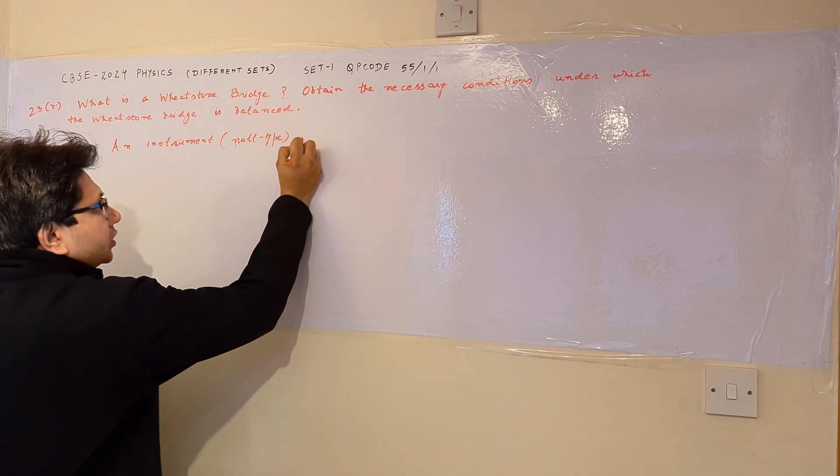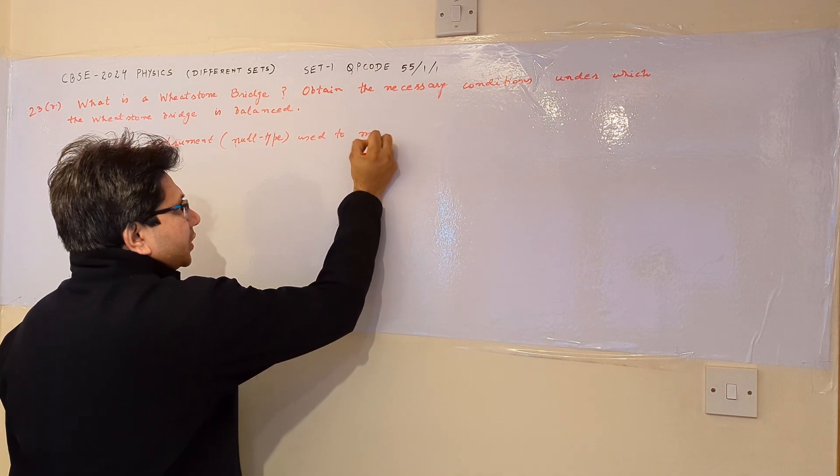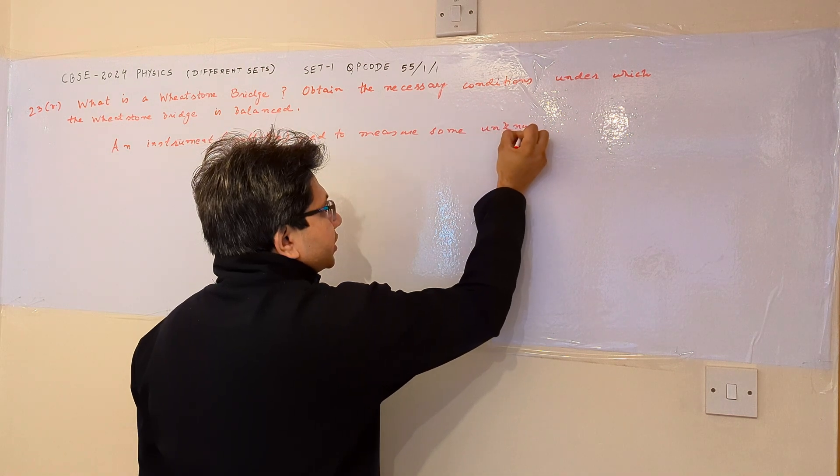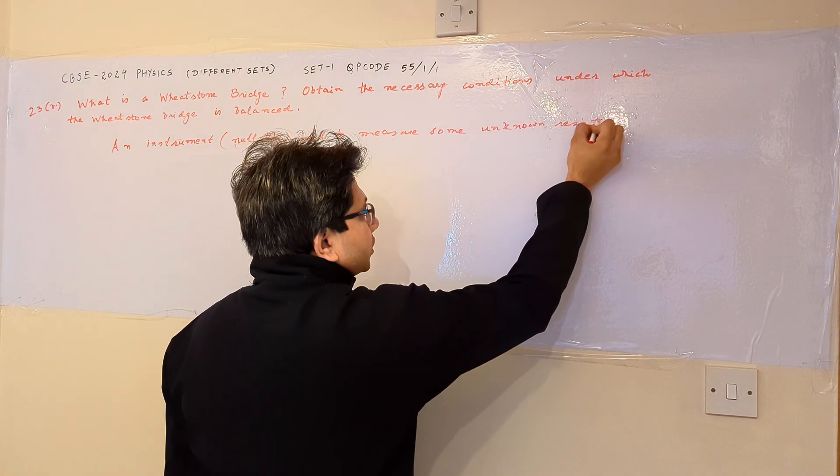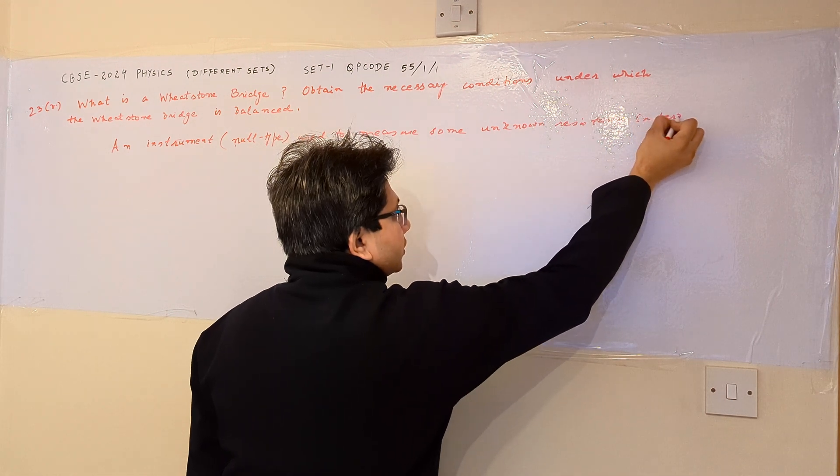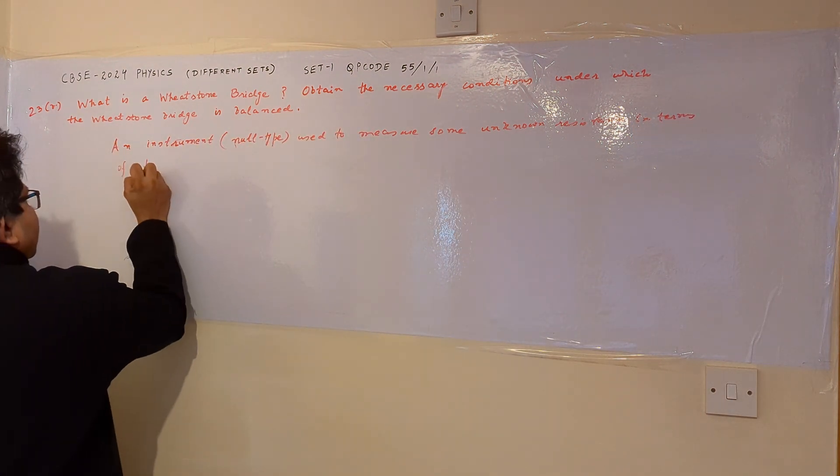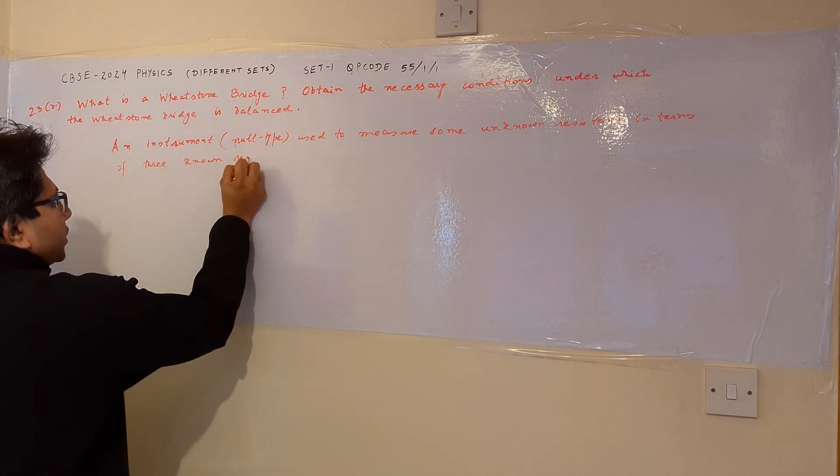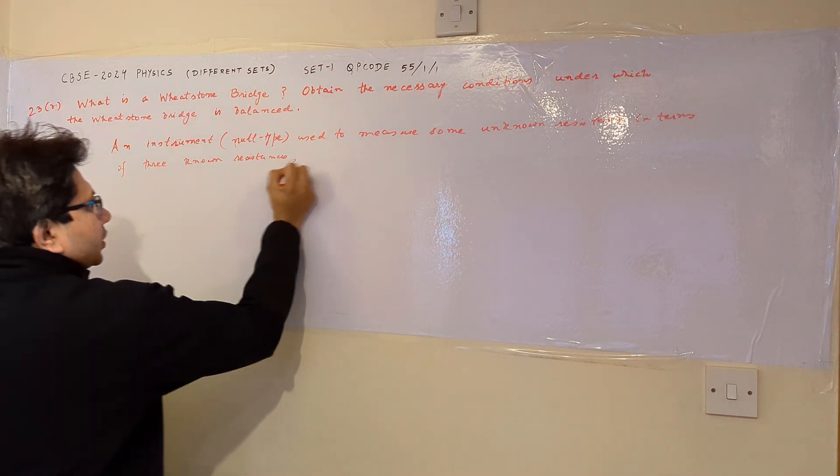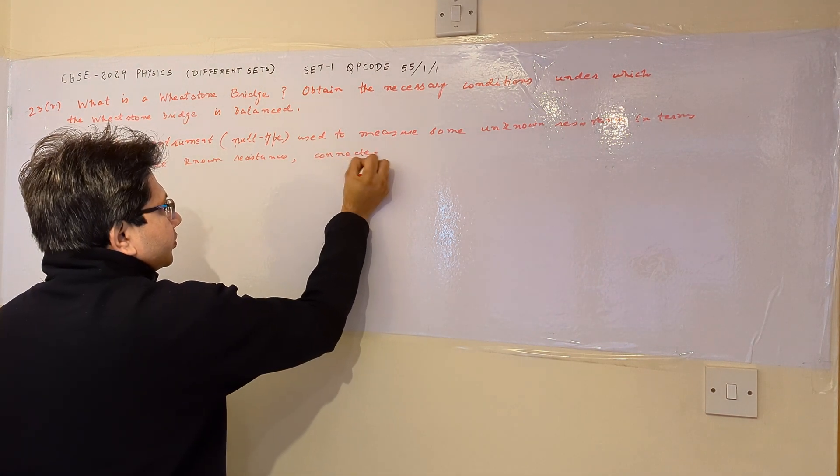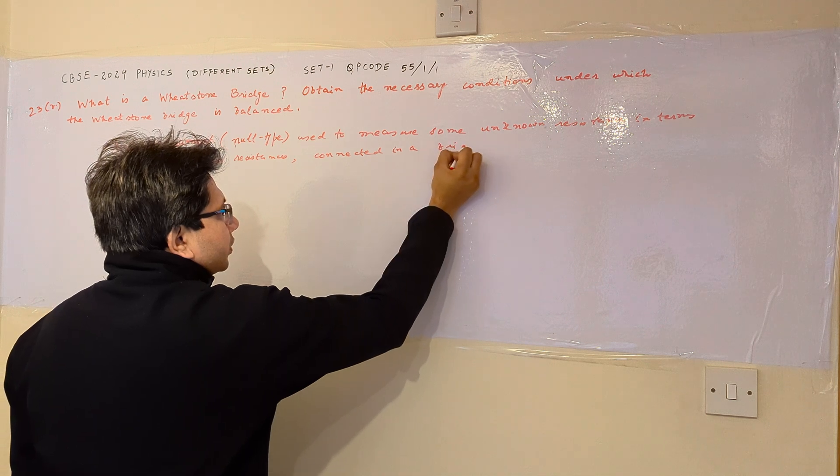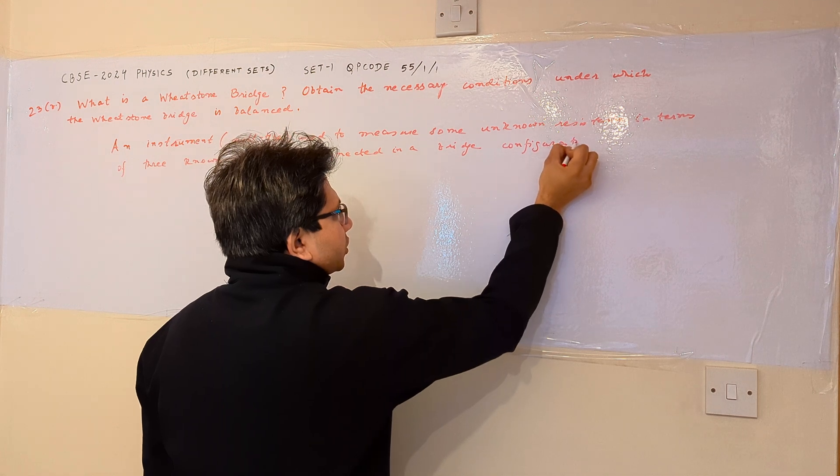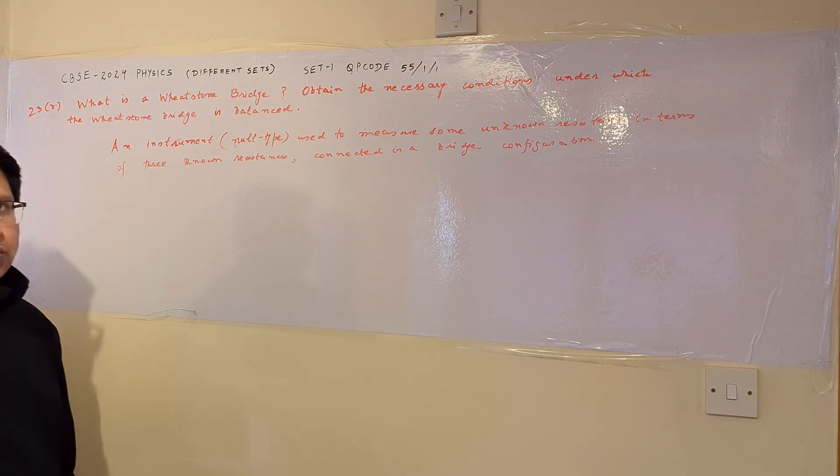an instrument used to measure some unknown resistance in terms of three known resistances connected in a bridge configuration. So the resistances are connected in a bridge configuration.